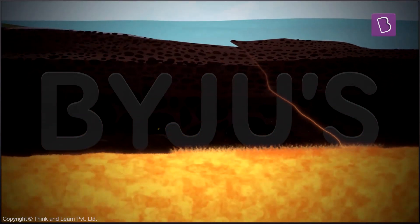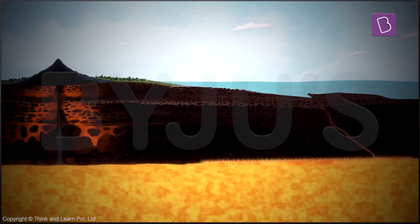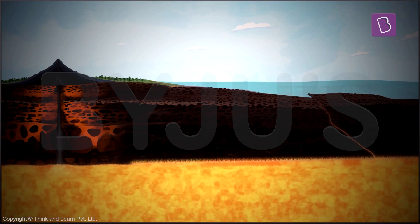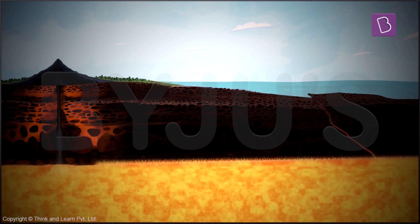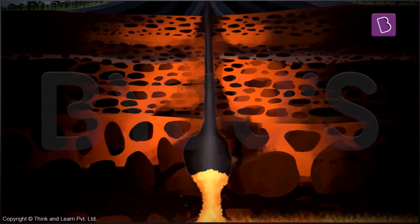Now once this pressure gets too high, it tries to find a way to escape. So due to the rising pressure and heat, this molten material or magma rises up through the cracks in the earth.